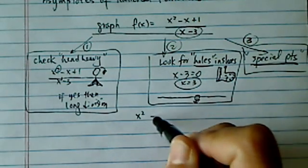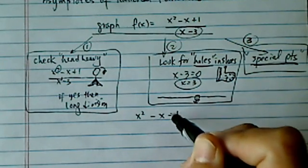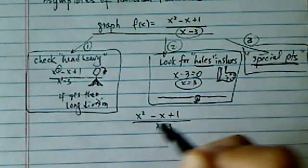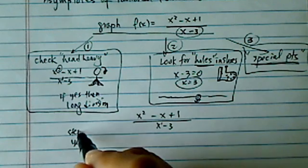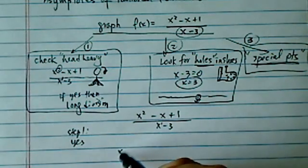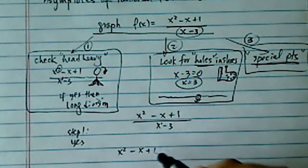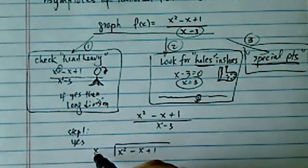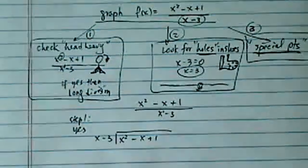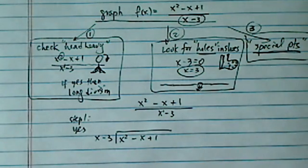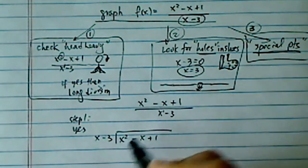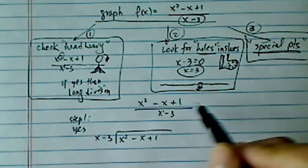We started with x squared minus x plus one over x minus three, and check see if it's head heavy. Yes. So step one, it is head heavy, so we're going to do a long division. The reason we do long division is that gives us some idea of the slanted or horizontal asymptote. We need to do long division once it's head heavy.